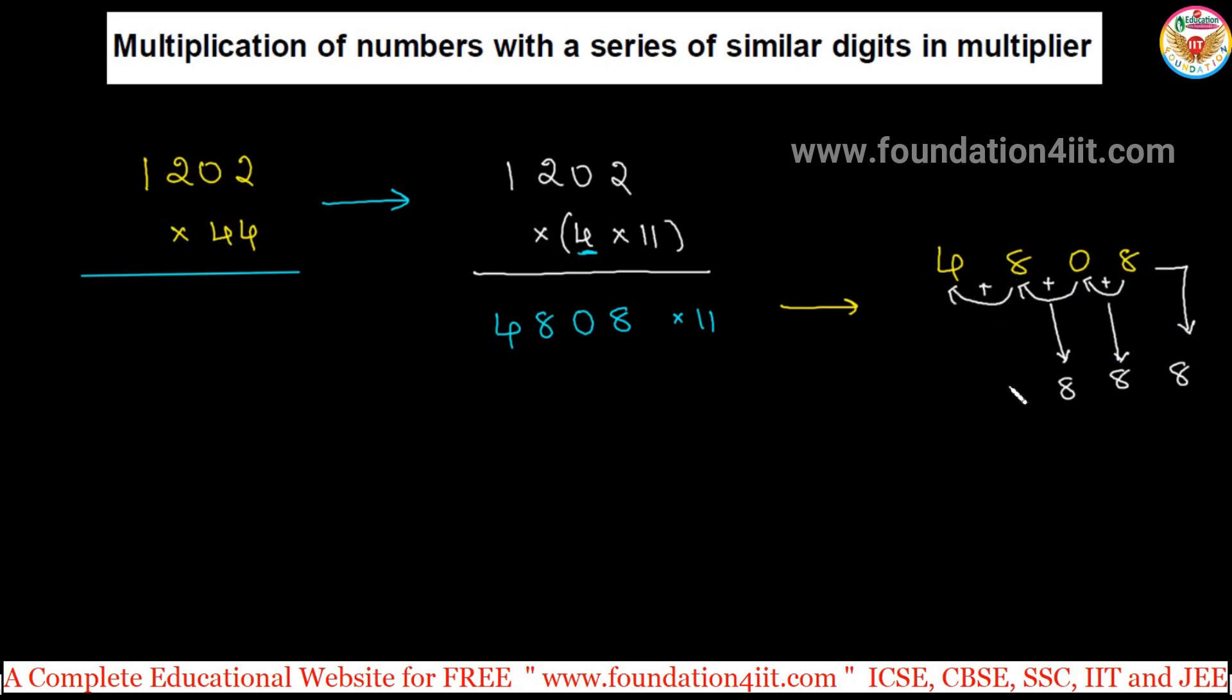8 plus 4 is 12, so 2 must be here and carry one to this. The last one, 1 plus 4 is 5. So 52,888. 52,888 is 1202 multiplication with 44. Same method applies even if it is a 3 digit or 4 digit number.